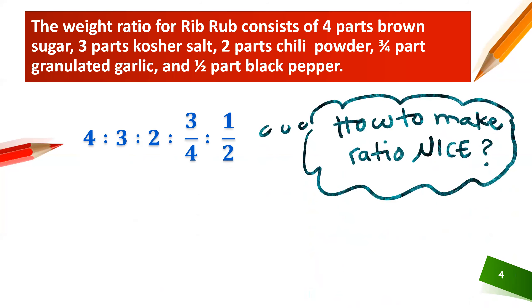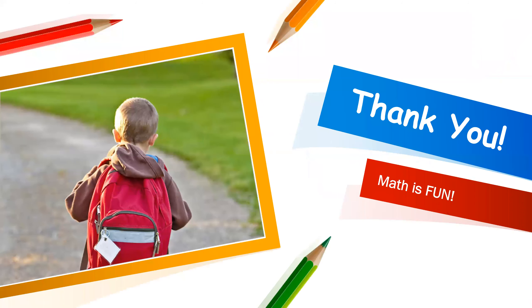Well how do we make that nice? Well least common denominator is four. Let's be clever here. We can multiply everything by four so that the ratio becomes 16 to 12 to 8 to 3 to 2 and that is nice because you don't have any more fractions in there. So that's a trick and sometimes you have to do that extra step in order to draw the models out nicely. And that is it for ratio. Math is fun! Math is fun!